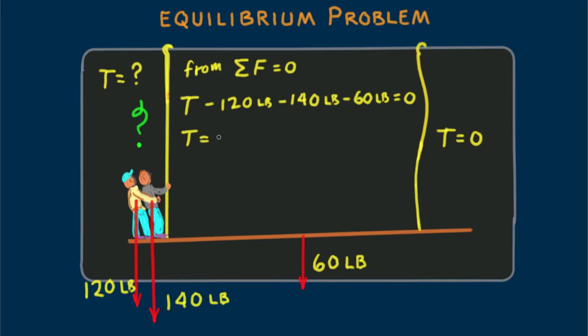Solving for T, T equals 120 pounds plus 140 pounds, plus 60 pounds, that's equal to 320 pounds. So we see the tension in the supporting rope is 320 pounds.